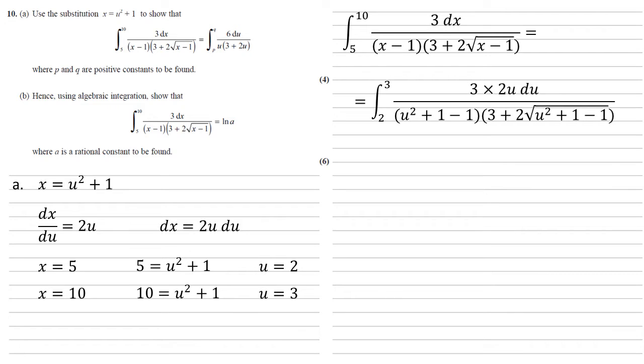Now a bit of simplification, we've got the 3 times 2u on the top, which gives us 6u, and we've got plus 1 minus 1 in two places on the bottom, which will cancel each other out. So we get the integral between 2 and 3 of 6u du over u squared, 3 plus 2 root u squared.